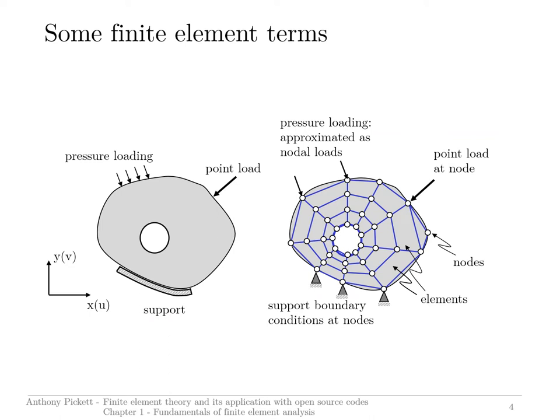This gives some information on the terms and nomenclature used for a finite element model. You can see a simple structure on the left — supported, with a point load and some pressure loading — located in XY coordinate space. If it's three-dimensional, we'll have a Z coordinate direction. The displacements of this structure would be in the U, V, and W directions.